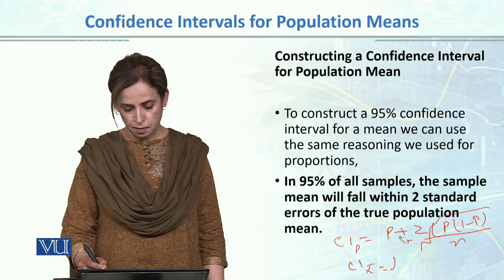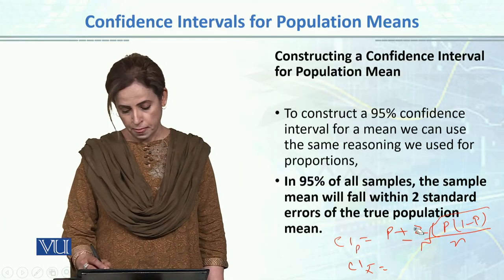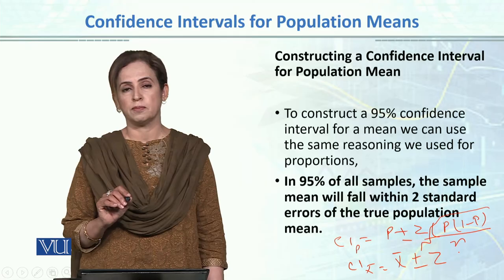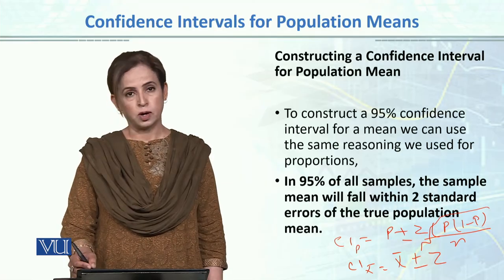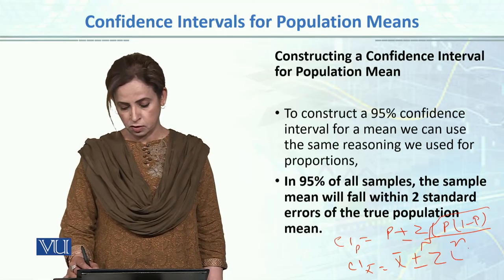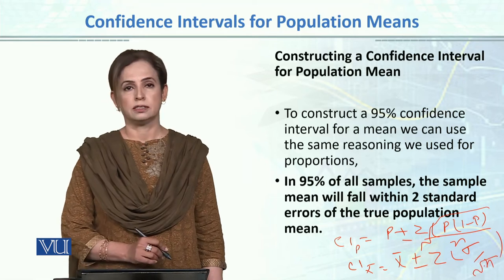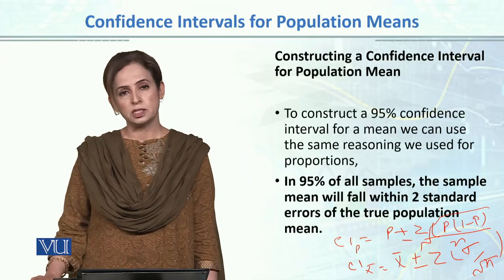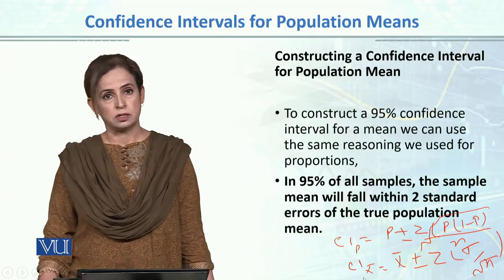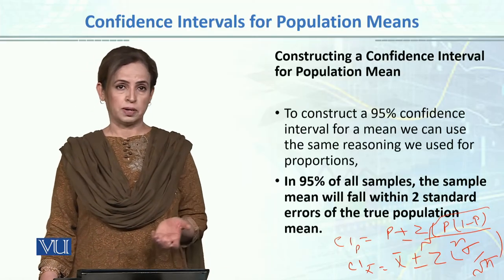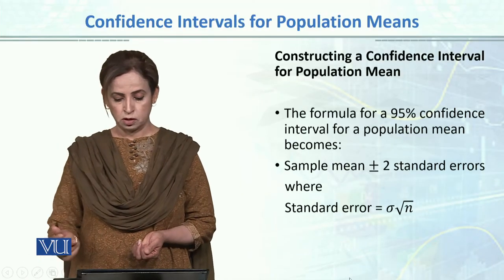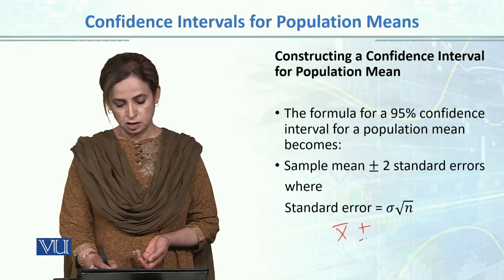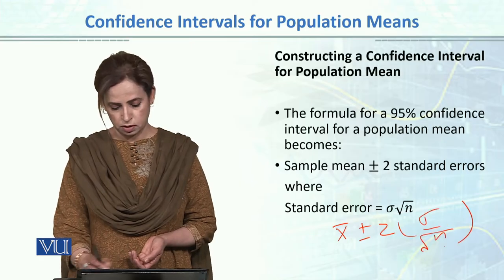We will do the same for the confidence interval for means. For the sample mean, if we have no information given about the population, we use sample mean plus or minus z — which we know is 1.96 for 95% — multiplied by the standard error, which equals sigma over square root of n. So the formula for a 95% confidence interval is: sample mean plus or minus z times sigma over square root of n.